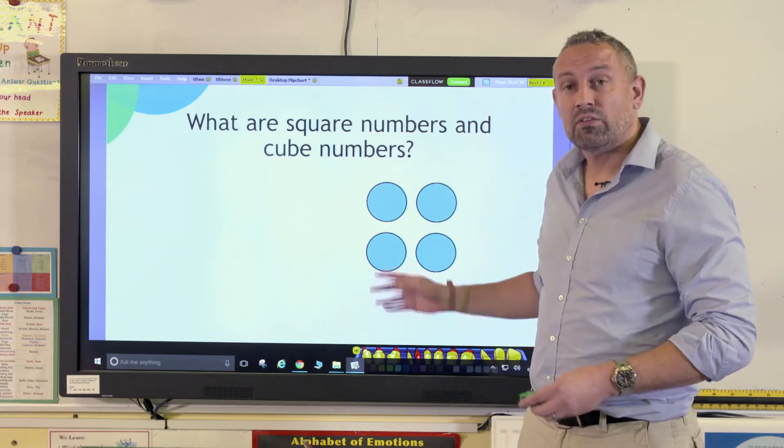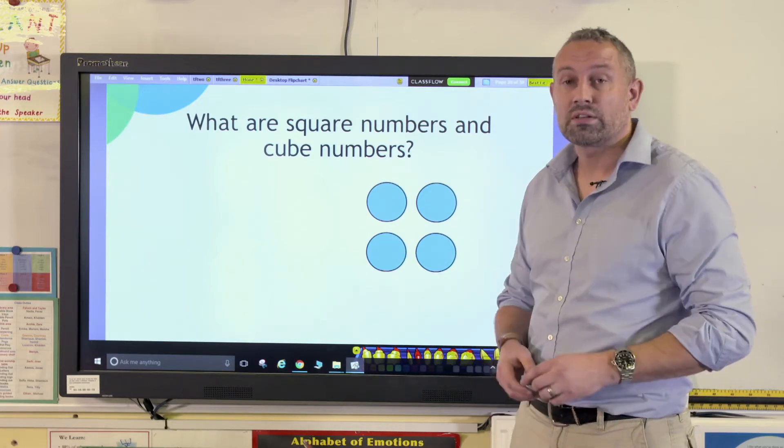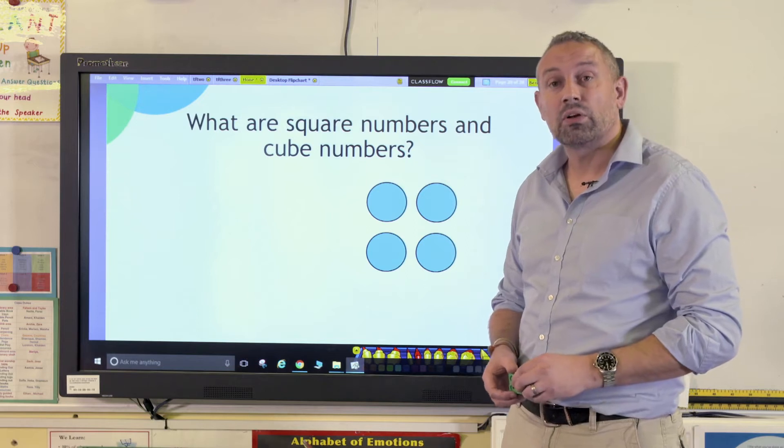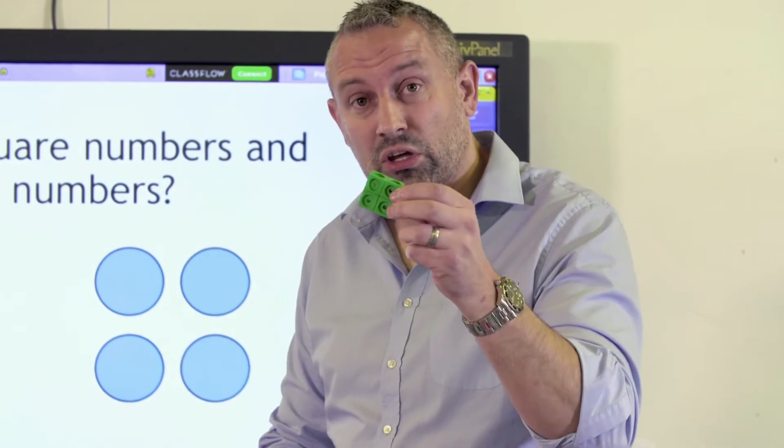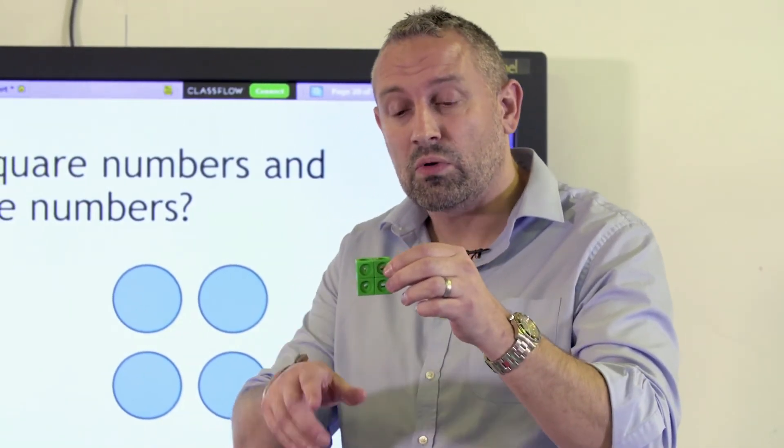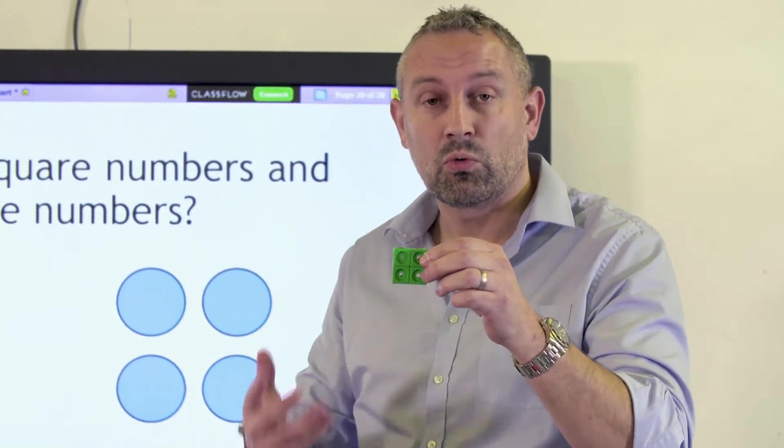Here we're going to look at arrays and concrete materials. Whenever I start exploring cube and square numbers with children, I always start with concrete first. These are brilliant interlocking cubes, and you can see here we've got 2 by 2, which is 4.